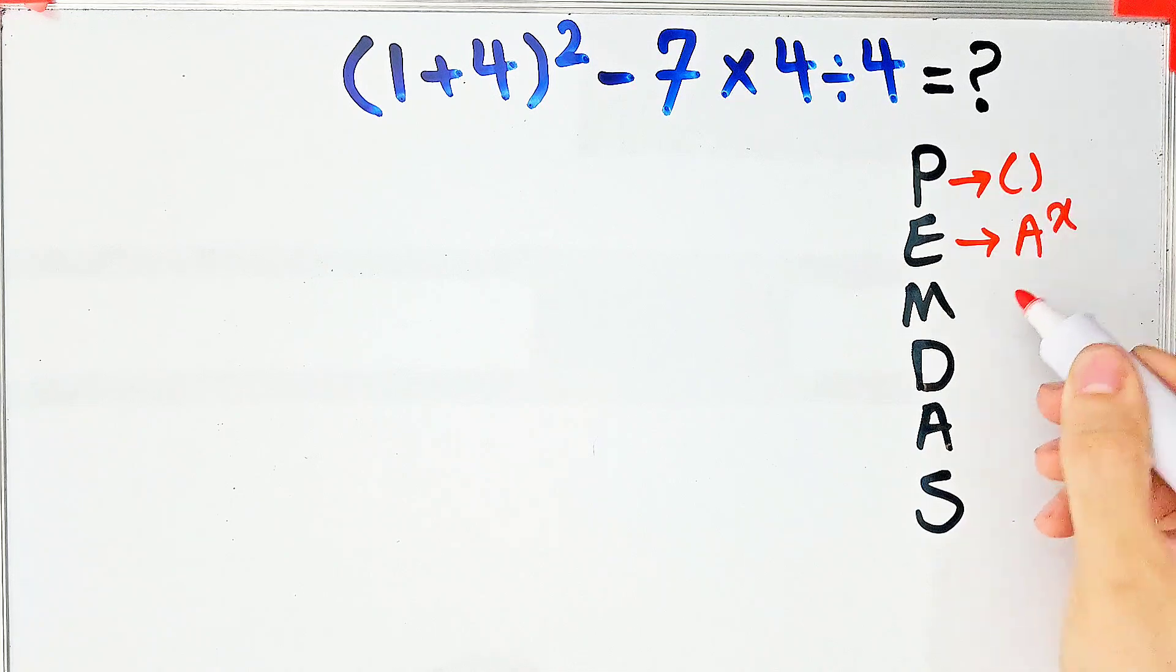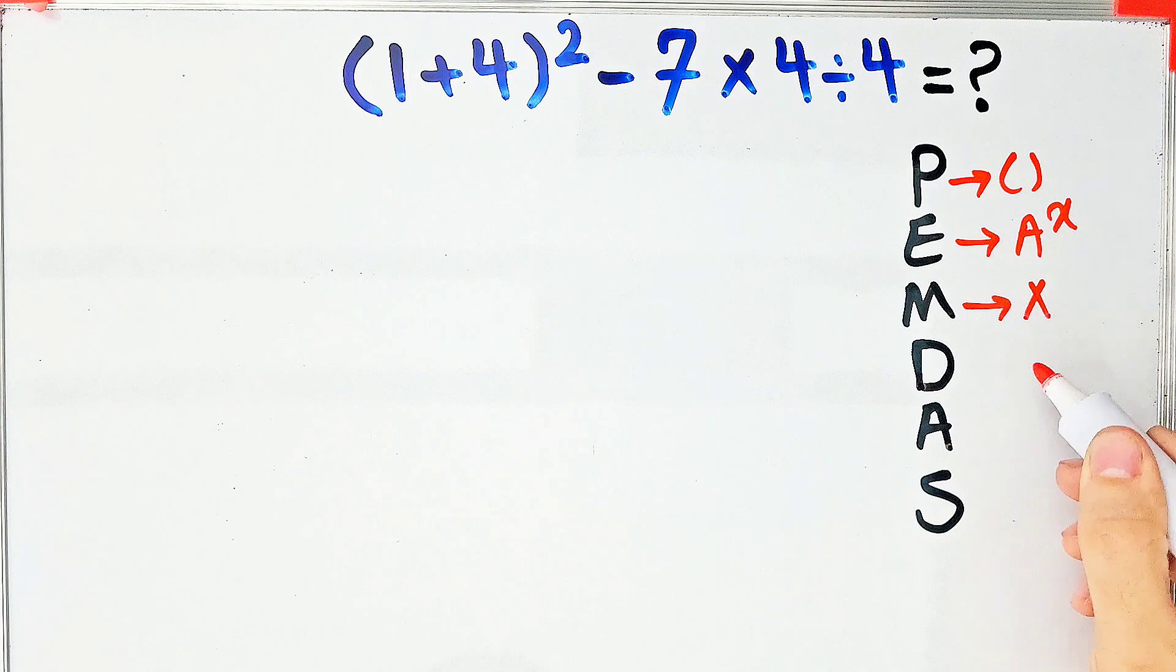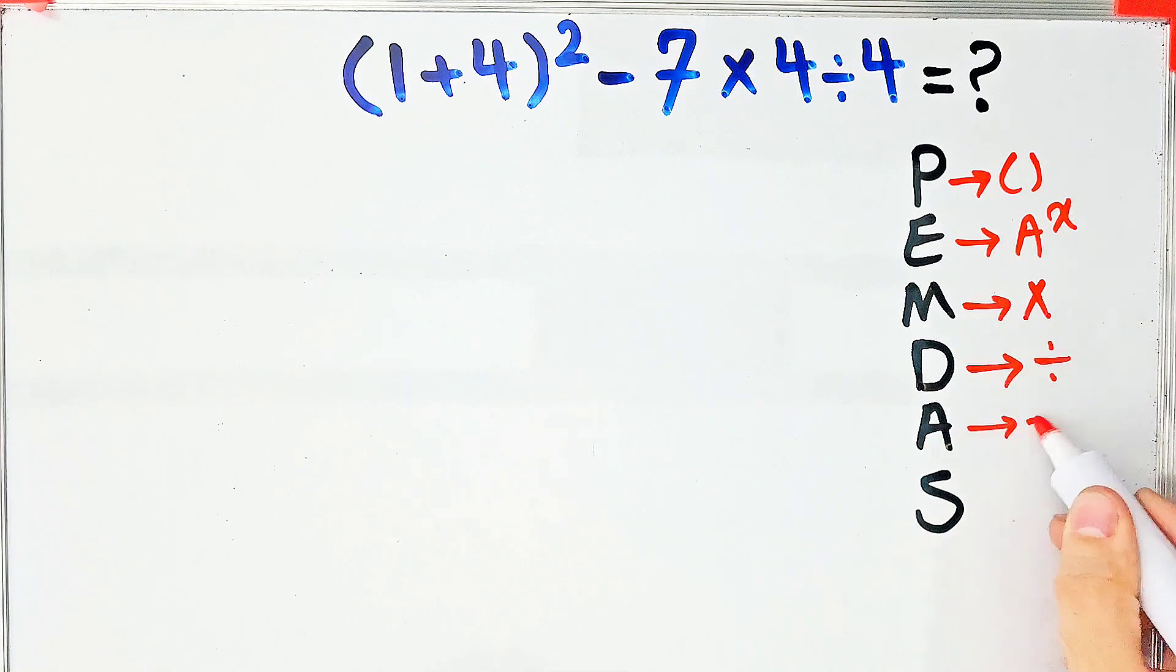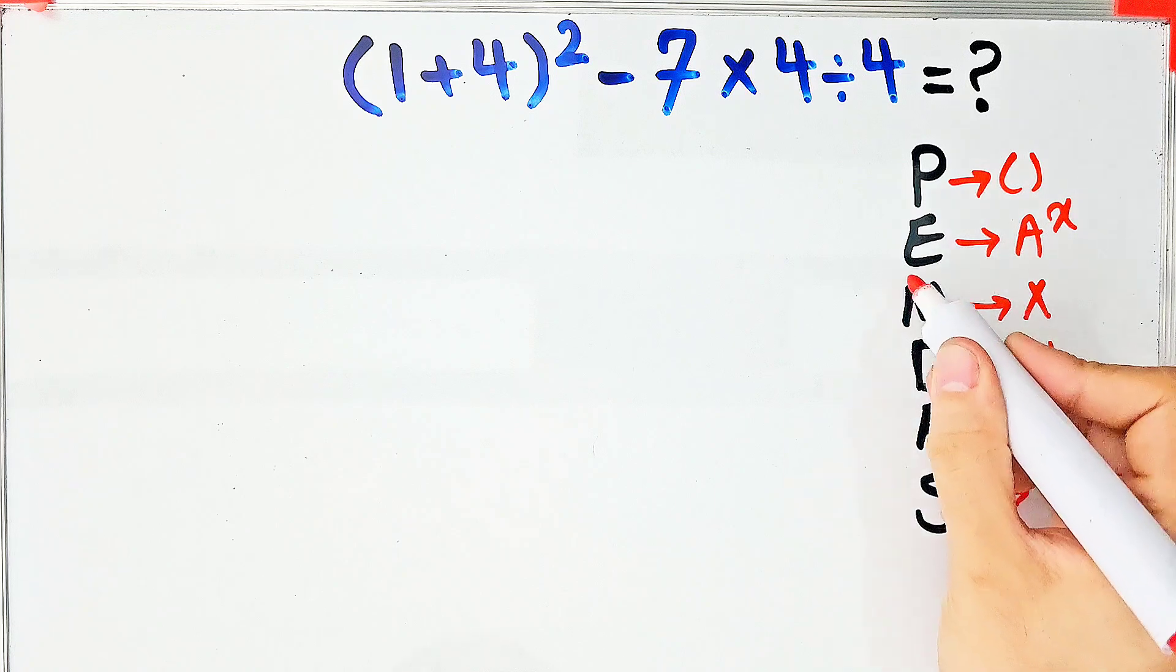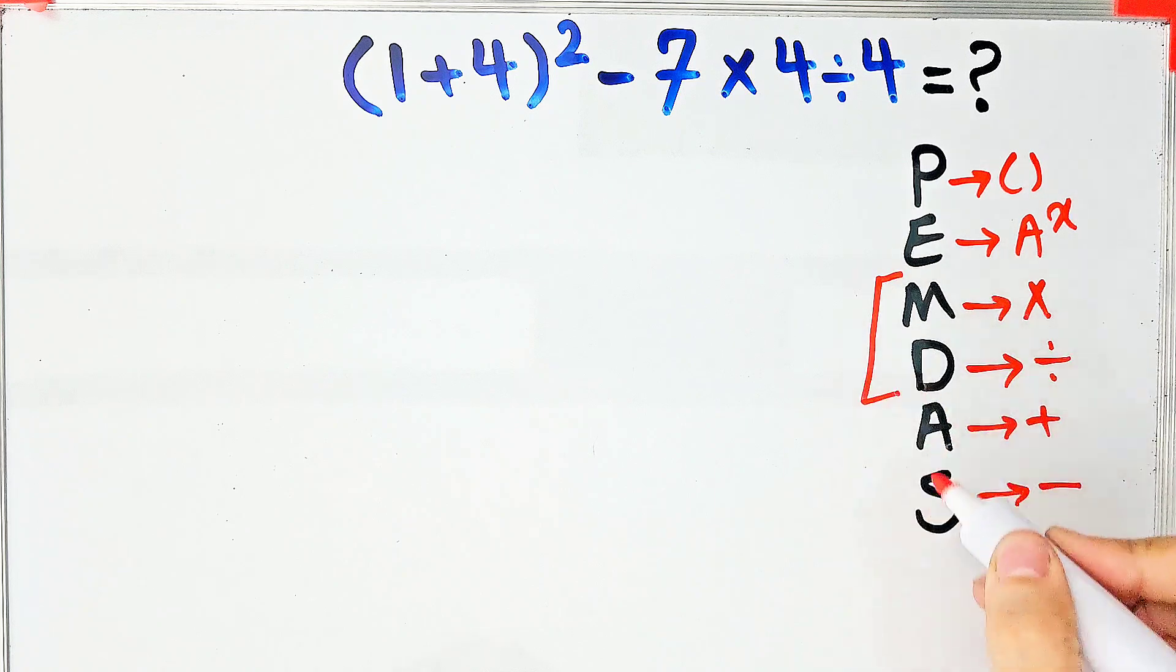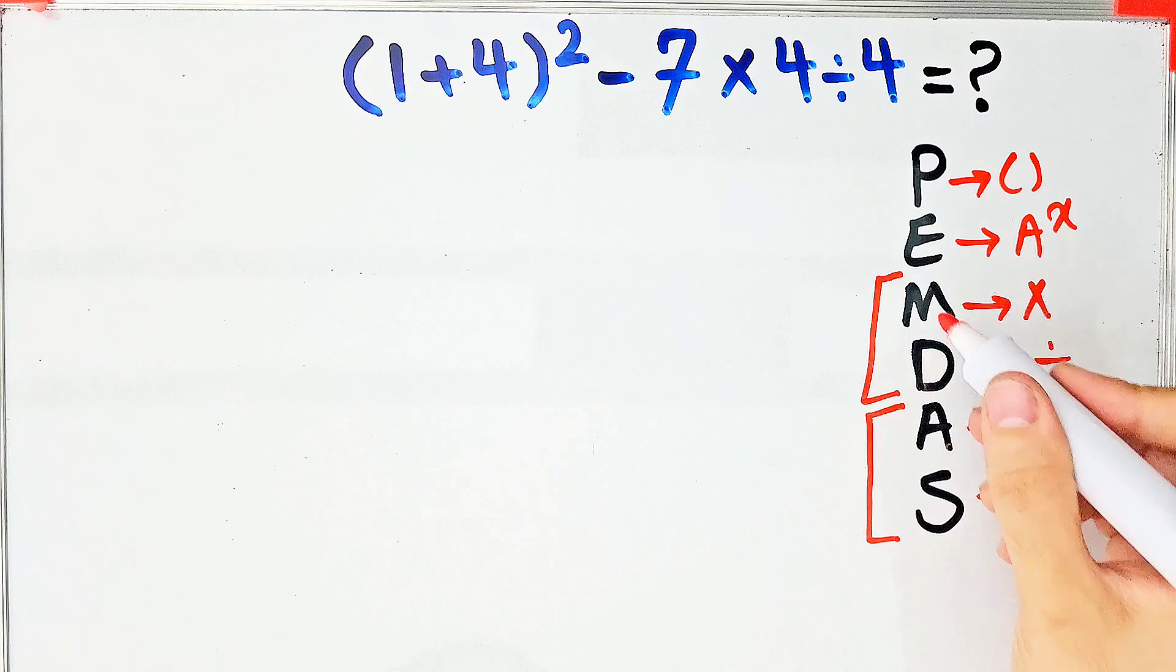M stands for multiplication, D stands for division, A stands for addition, and S stands for subtraction. Multiplication and division have the same level of priority. Also, addition and subtraction have the same level of priority. When we have both in an expression, we start from the left and simplify the question.